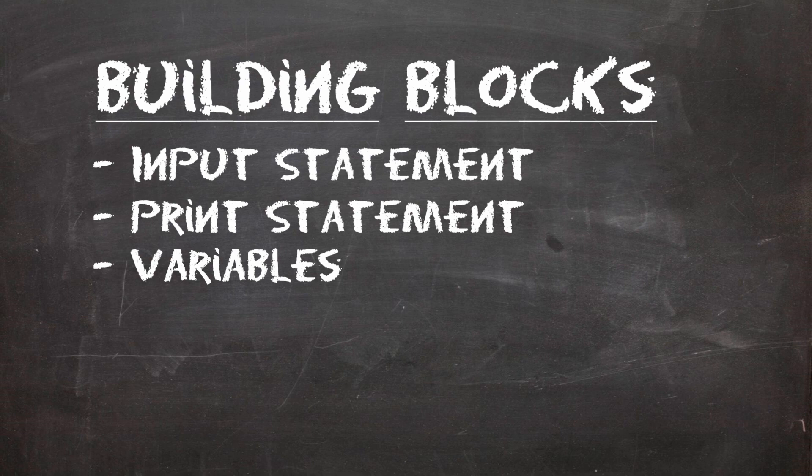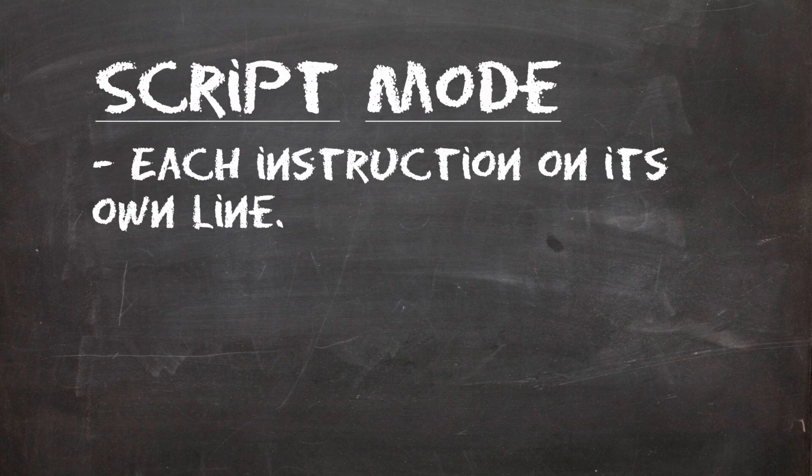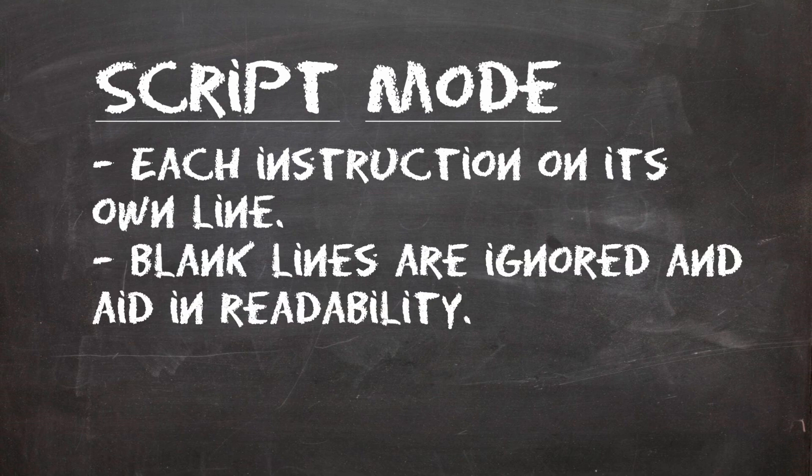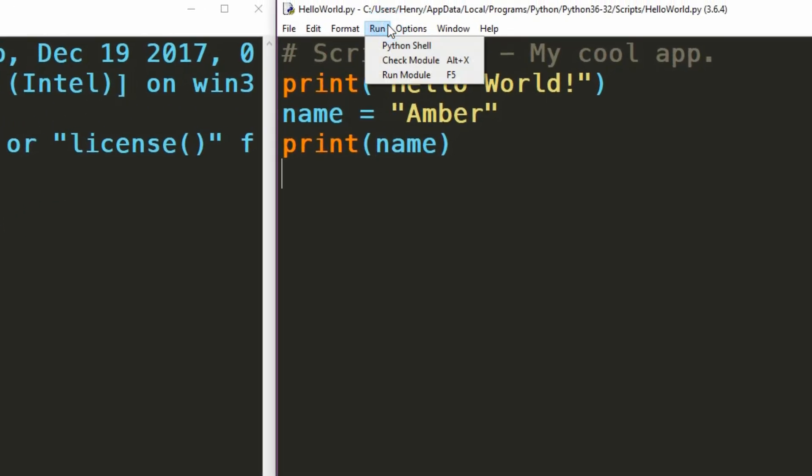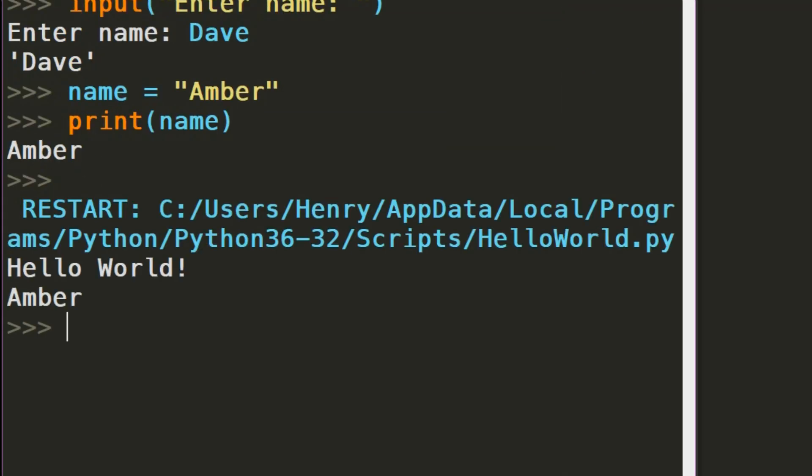Let's move over to script mode, and we'll write our own program from scratch. Just a couple of notes on script mode before we get started. Each instruction you write will be on its own line. You can leave blank lines if you want, if it helps you read your code better. In order to run your program, you can hit F5, or you can go to run at the top. This will save any of the work you've done so far, and the output will appear in the shell window. Right, onto our first program.